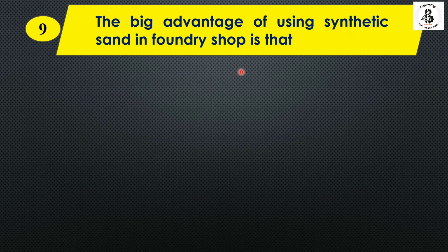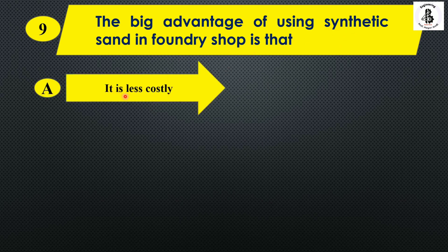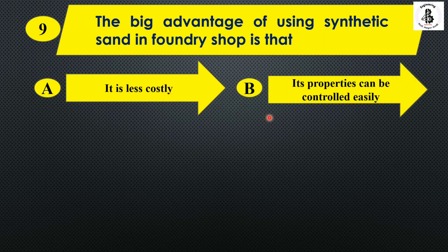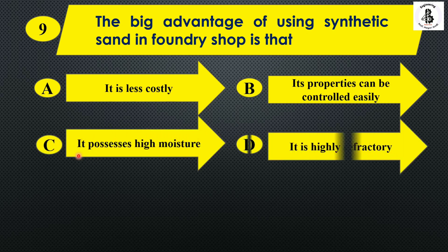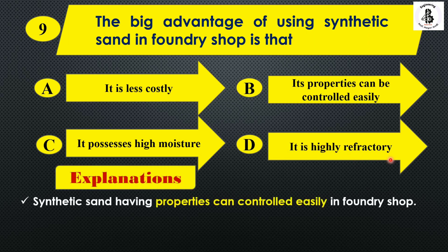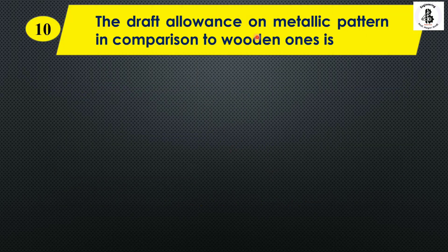The next question: the big advantage of using synthetic sand in a foundry shop is that — option A: it is less costly; option B: its properties can be controlled easily; option C: it possesses high moisture; option D: it is highly refractory. Synthetic sand has properties that can be controlled easily in the foundry shop, so the right answer is option B.